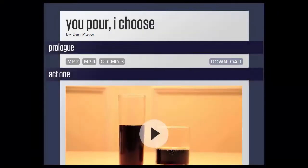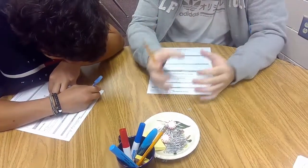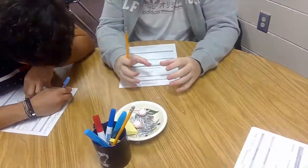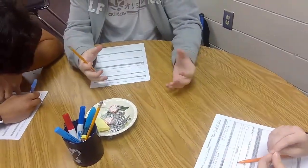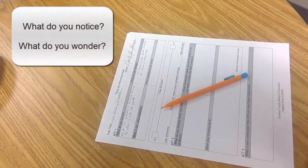You've just watched Act 1 of the three-act task, You Pour, I Choose. Was your curiosity piqued? This three-act task is a great hook into the study of volume and solid figures in high school geometry. It's both engaging and an opportunity for teachers to assess students' prior knowledge. Act 1 begins with a video and is driven by two questions. What do you notice? And what do you wonder?